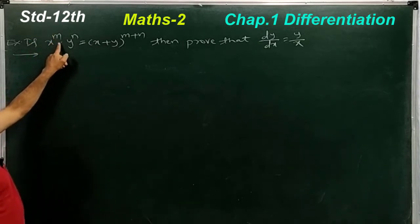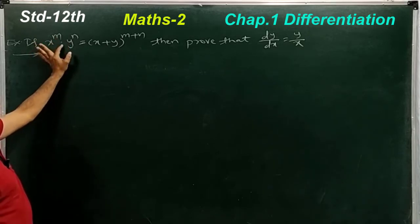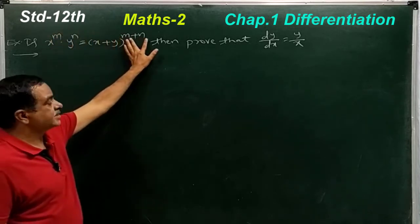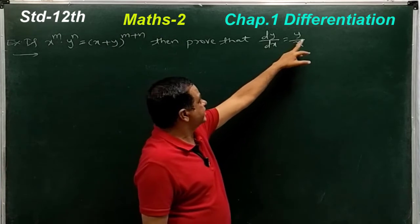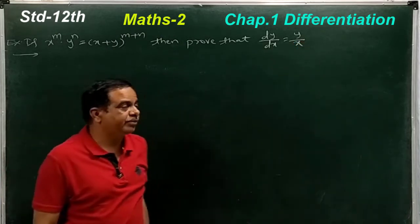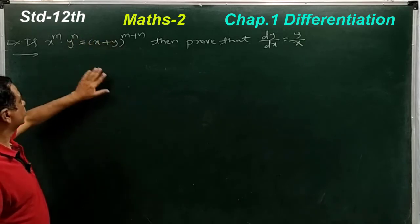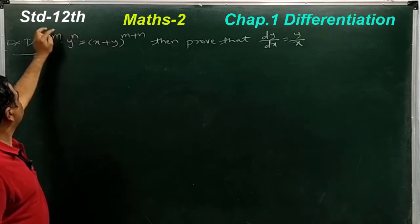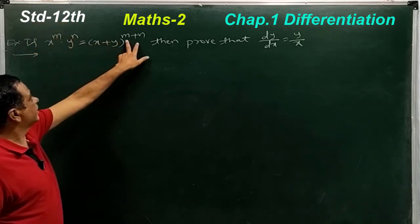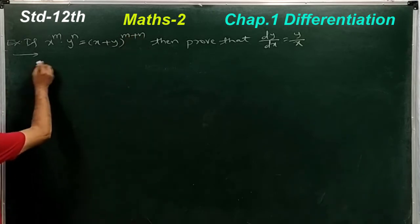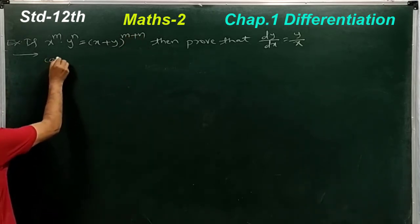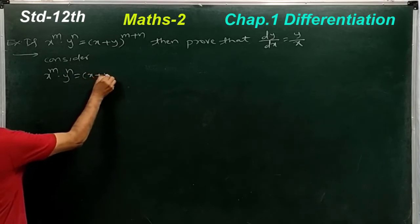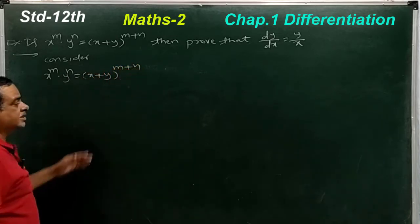Here, m and n are exponents. On the left side we have multiplication: x^m into y^n. On the right side we have addition of bases and addition of indices: (x+y)^(m+n). In another example it may be replaced by p and q. So just note the relation — here is multiplication, but here is addition of bases with addition of indices. This is the type of implicit function.